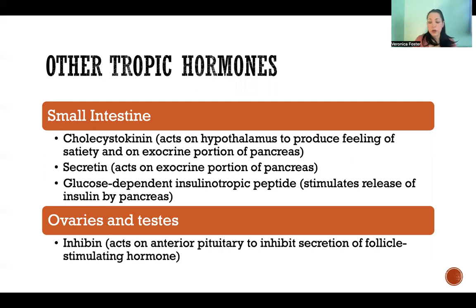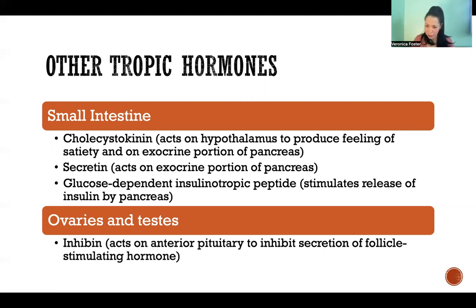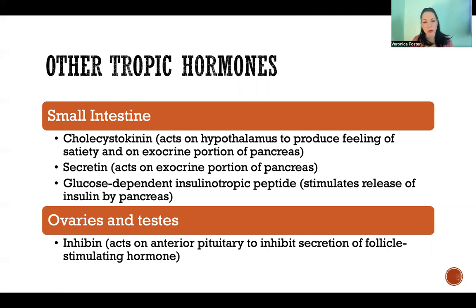Similarly, secretin also acts on the exocrine portion of the pancreas. And glucose-dependent insulinotropic peptide — a hormone secreted by the small intestine in response to glucose — tells the pancreas to secrete insulin so that it can help manage rising blood glucose.